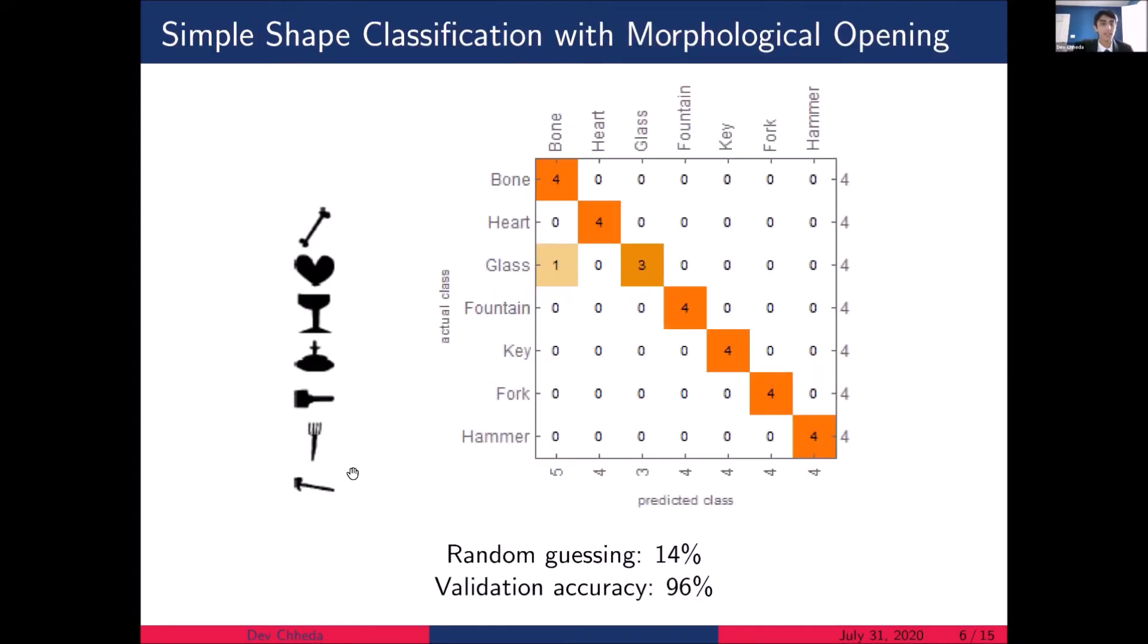So we consider a simple data set with seven different types of shapes and our process as follows. We compute the morphological opening bounds for each shape. And then we use a multi-layer perceptron, which takes as input the morphological opening bound and attempts to classify the shape into one of these seven classes. After training, we're able to achieve a validation accuracy of 96%. And on the right here, you can see the confusion matrix with only one misclassification. For context, if we were guessing randomly on a data set with seven classes, our accuracy would be just about 14%. So obviously, we're doing a lot better than that.